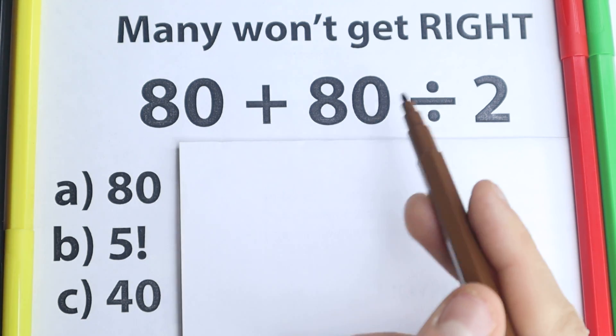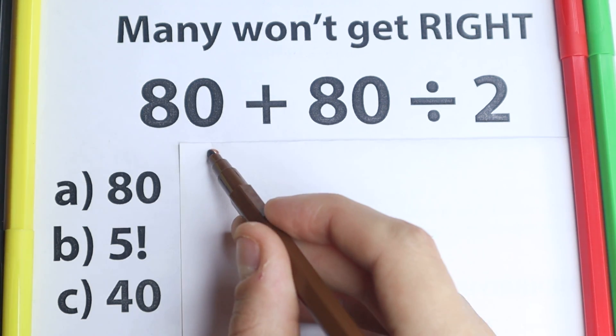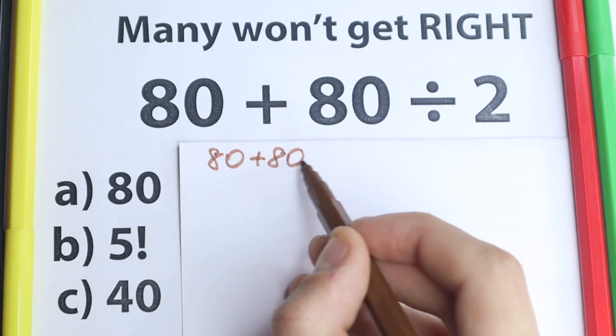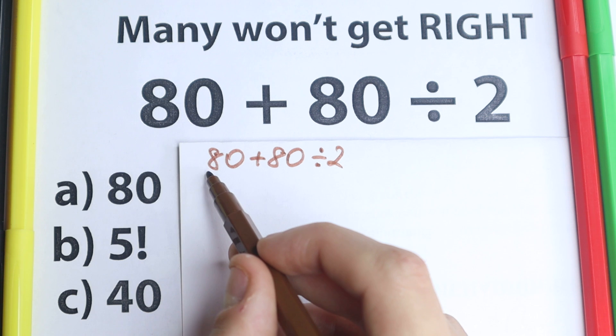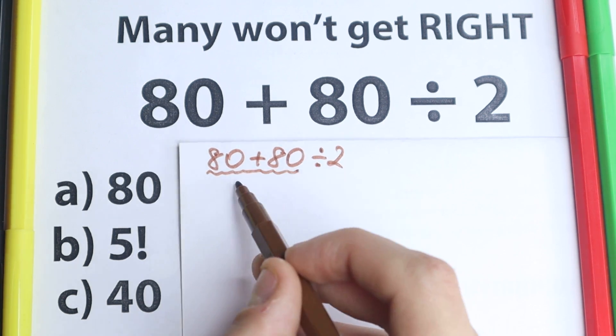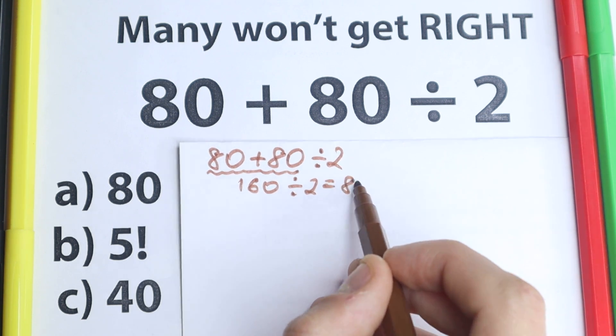Right here we have three options. So let's try to solve it and I think one part of you solve it like that. We have 80 plus 80 divided by 2 and I think one part of students solve it like that. They say, okay, 80 plus 80 equal to 160 and divide it by 2, we still have this division, equal to 80.